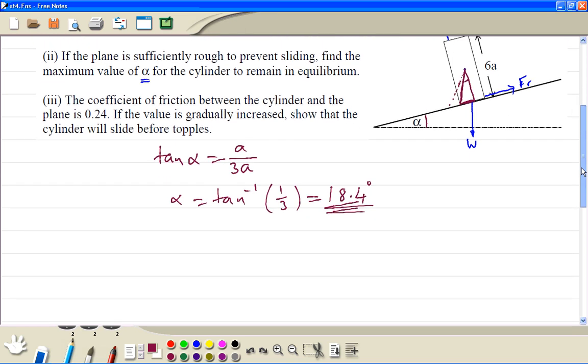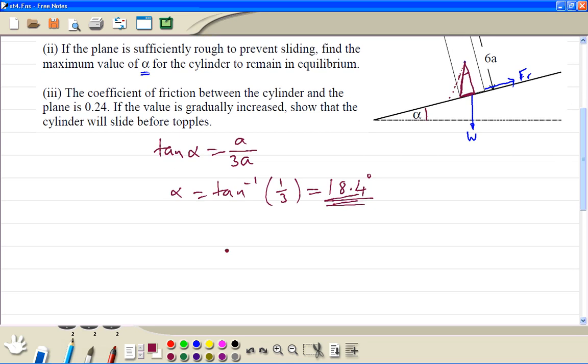Part 3, so we can just work it out. The component of weight down is mg sine theta. Component of weight here is mg cosine theta.